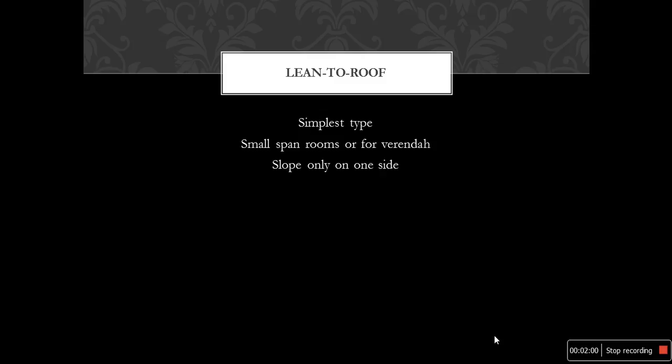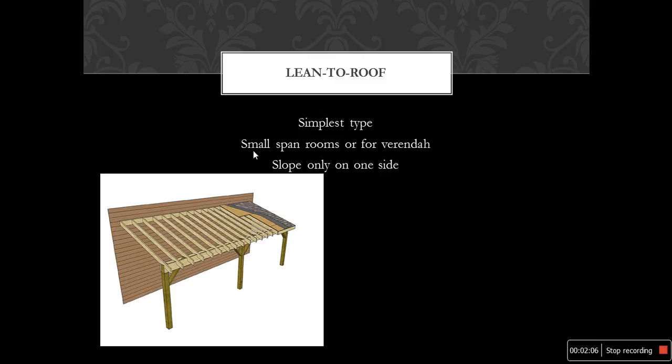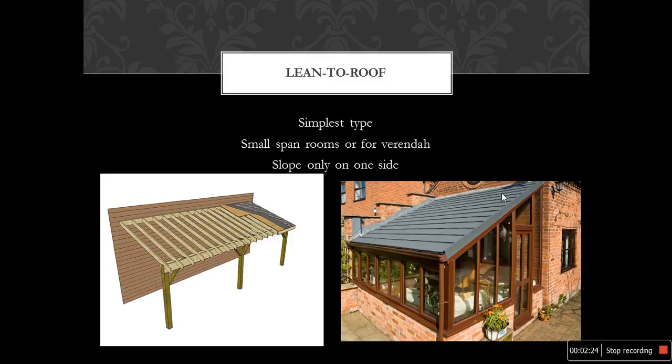Lean-to roof is the simplest type of pitched roof. There will be a small open space for a veranda where this type of lean-to roof is provided. It will have a slope only on one side. This diagram and example illustrate what a lean-to roof looks like.